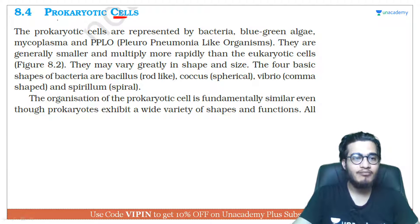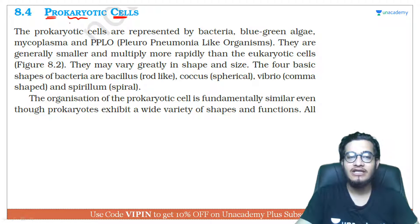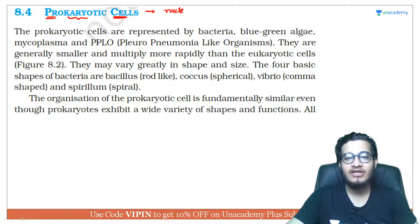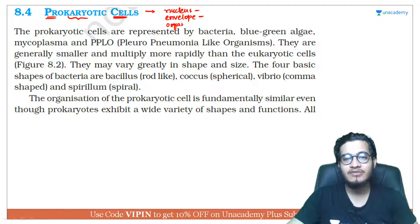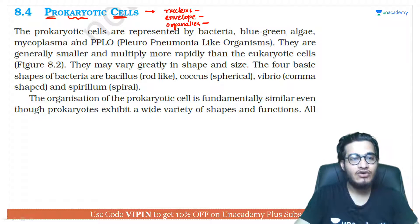Prokaryotic cells — 'Pro' means primitive and 'karyon' means nucleus. These are the cells in which the nucleus is not well-developed. The nuclear envelope is absent. Membrane-bound organelles are also absent here — this we have already discussed.